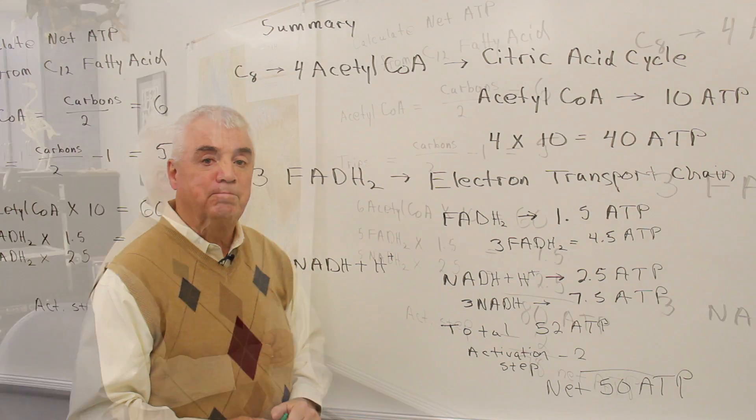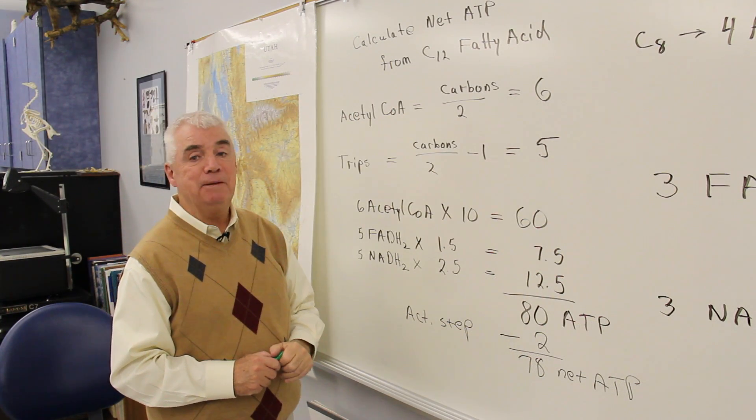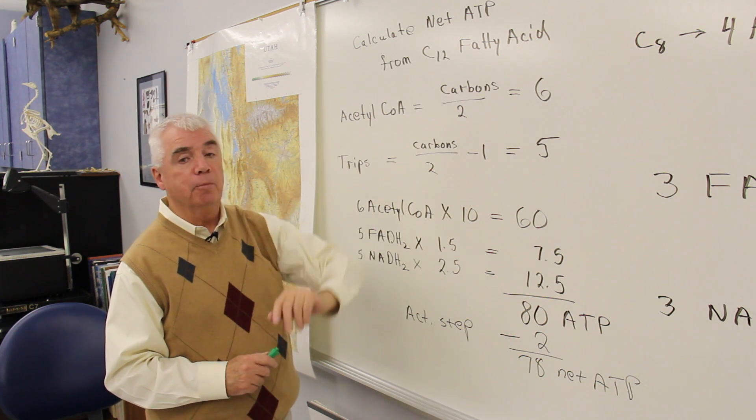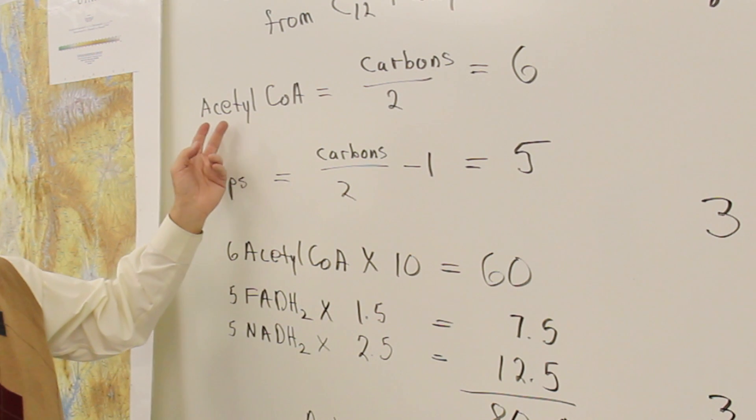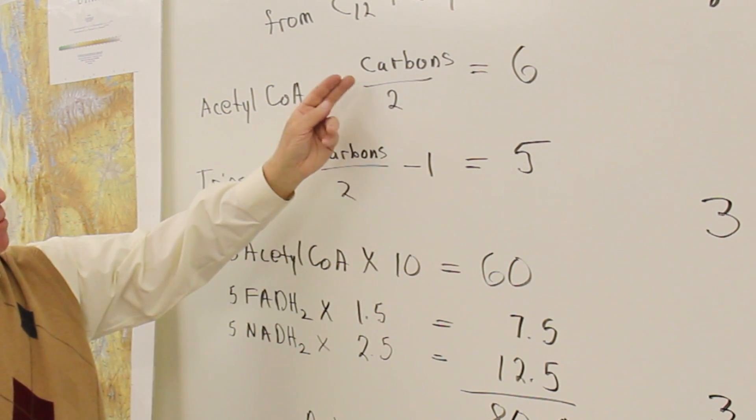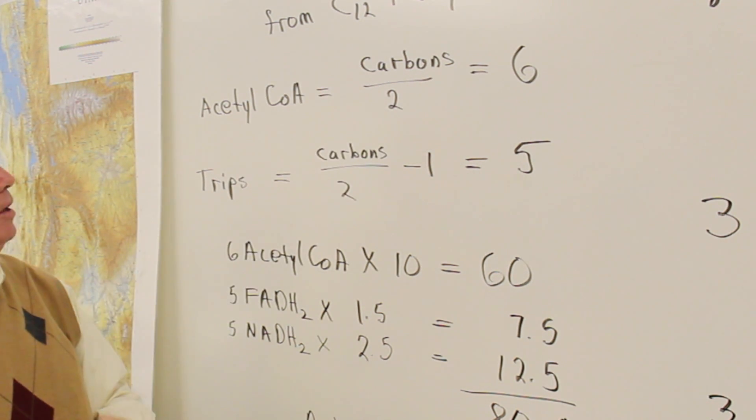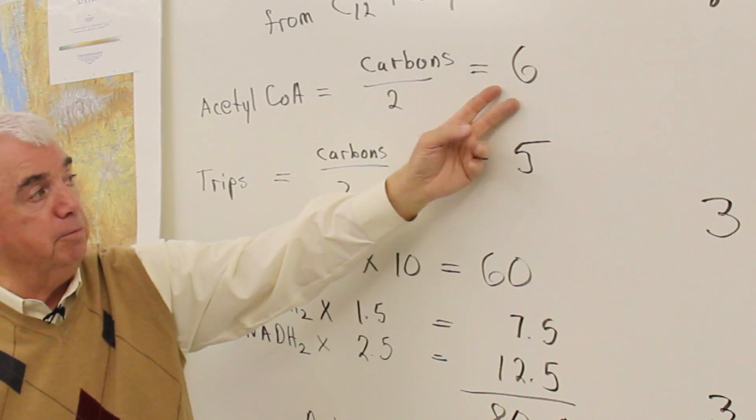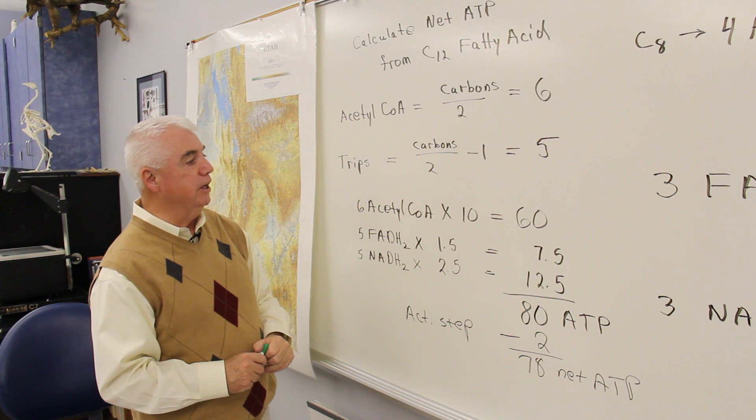Let's look at a typical problem. What if we ask you to calculate the net ATP from a 12-carbon fatty acid? Here are some considerations. We want to find the units of acetyl-CoA. It's equal to the number of carbons divided by 2. So we're starting with 12 carbons, 12 divided by 2, we get 6 acetyl-CoA units.